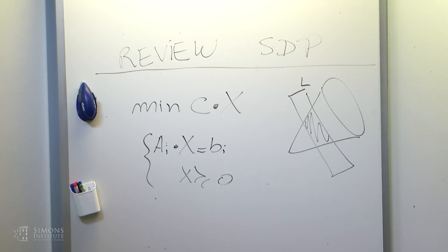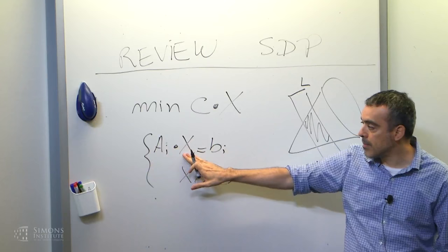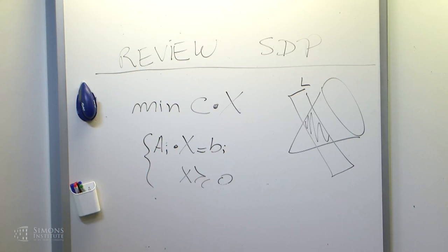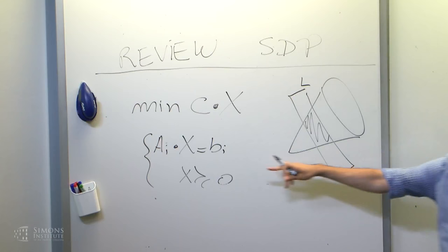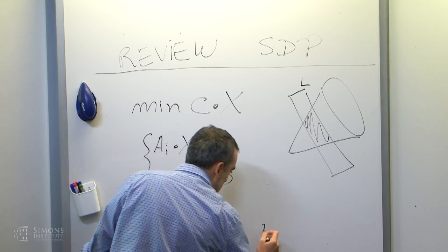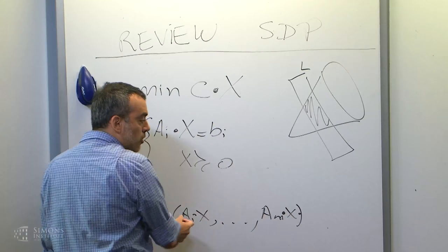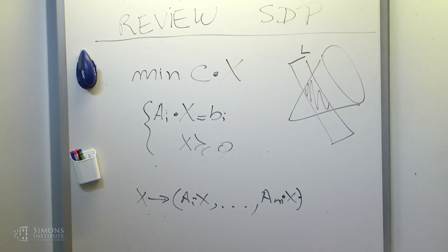The dual has the form: maximize b transpose Y, subject to the condition that the sum of A sub i times Y sub i is less than or equal to C. If my operator takes a matrix into the vector of the A sub i inner products of X, the adjoint is exactly this sum. So we have a map taking X into (A1X, ..., AmX), and the adjoint goes from R^m to symmetric matrices — exactly this map. I'm writing the dual in coordinate form.